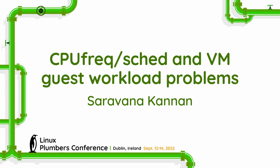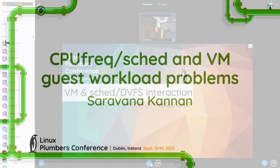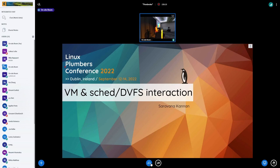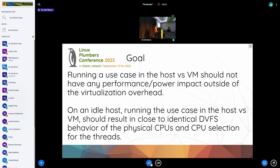I'll start. We've been playing around with VMs at Google and Android — there have been a bunch of talks about it. I decided to play around with it to see how DVFS reacts to workloads running on VMs. It wasn't behaving well. My ideal goal here is that if somebody chooses to run a use case in host versus VM, they should not have to worry about performance or power suffering just because they chose to run it inside a VM.